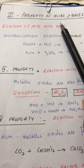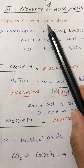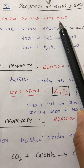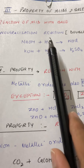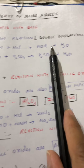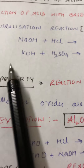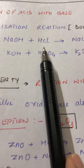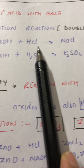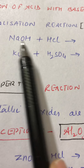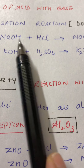The third property of acids and bases involves the reaction of acids and bases with each other, called a neutralization reaction. It is an example of double displacement, in which there is an exchange of ions. For example, taking the most common acid and base, the sodium ion reacts with the chloride ion and hydrogen with the OH ion.